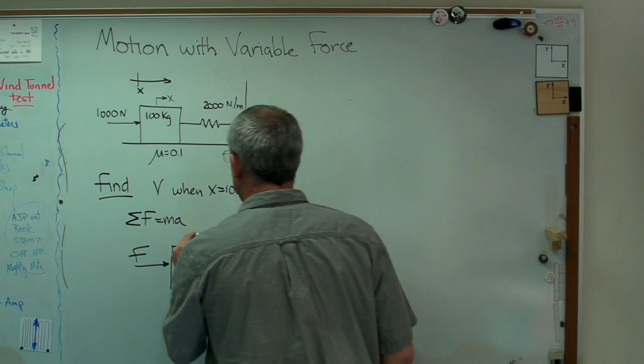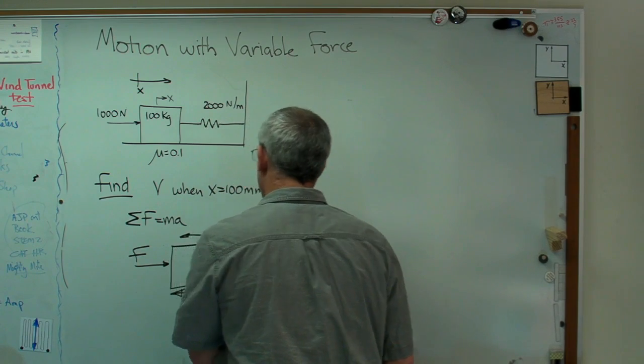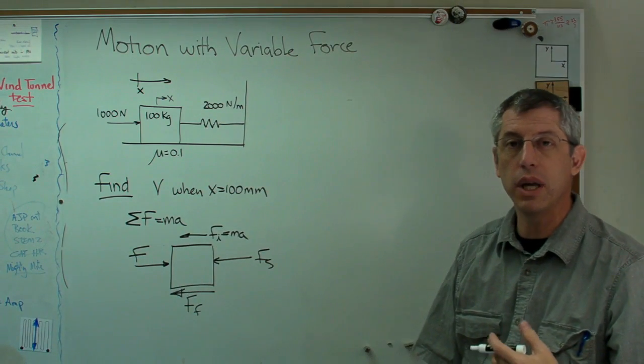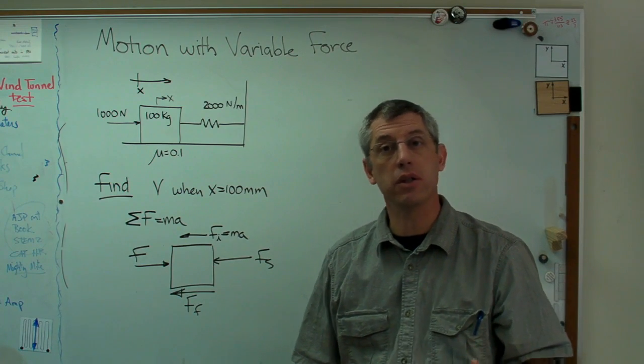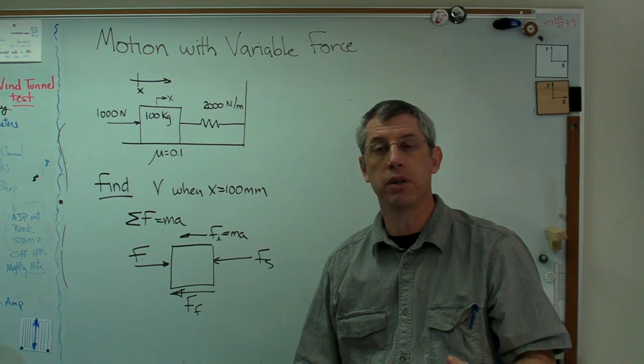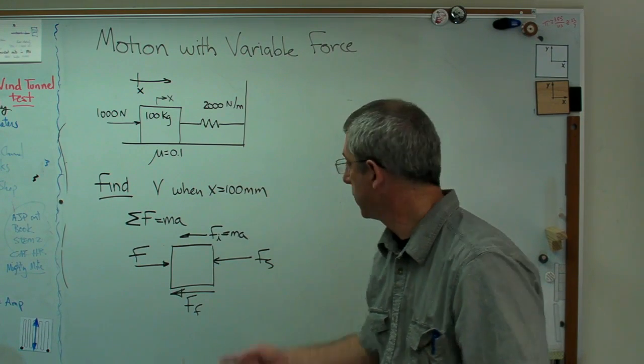So I'm going to write ma. I'm going to call that right now an inertial force and point it that way. Inertial force goes in the opposite direction of acceleration because mass is really a measure, a quantity that describes an object's resistance to acceleration. So there we go. I'm going to put that there.